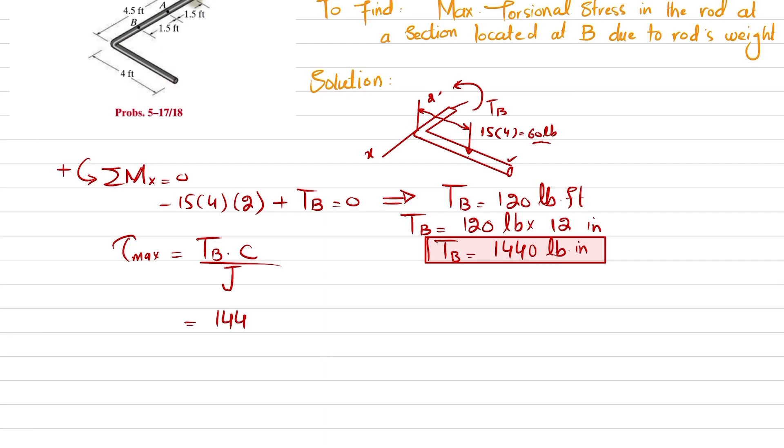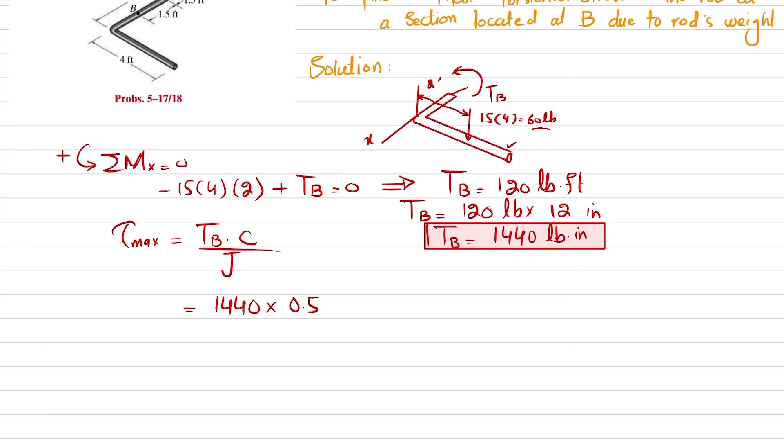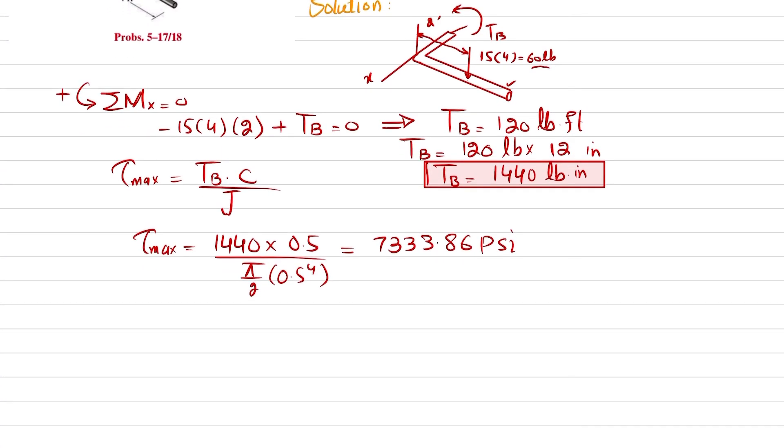T_B is 1440 pound-inches, and c is 0.5 inches because the diameter is 1 inch, divided by J, which is π/2 times 0.5 to the power 4. When you solve this, you get 7333.86 psi, or 7.333 ksi. So this is the maximum shear stress.